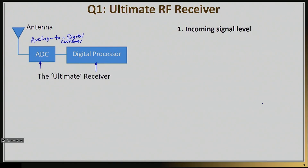Here is your ultimate RF receiver. The antenna will take an electromagnetic wave from free space and translate it into a voltage. That's broadly what antennas do — they capture waves and transfer them into voltage. The ADC takes that voltage and digitizes it, and then you do the rest of the processing with digital processors. So that's it — your field is done, and advancement in digital signal processing is basically ending RF.